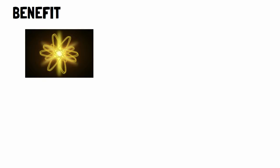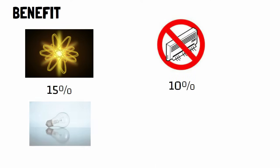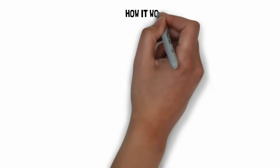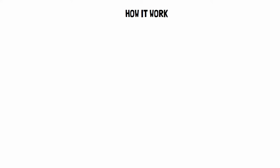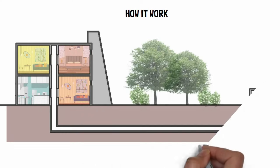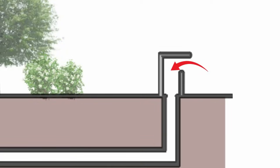Benefits of this system include reduced energy consumption up to 15%, a 5 to 10% reduction in air conditioning demand, electricity bill savings of 8 to 10 percent, and it is environment friendly. Hot air enters through the wind tower, which is connected to the underground duct.